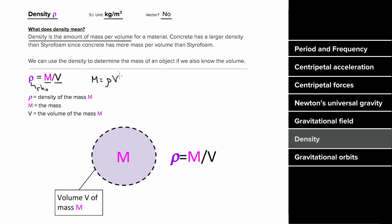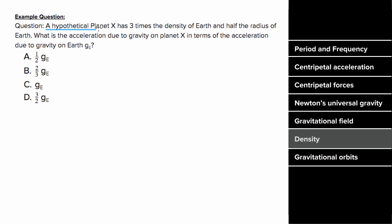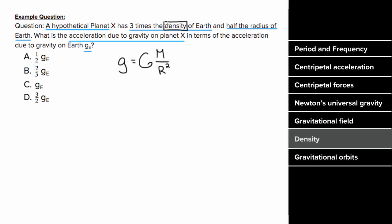So what's an example problem involving density look like? Let's try the hypothetical planet problem again, but this time planet X has three times the density of Earth and half the radius. We write the gravitational field as big G M over R squared, but we don't know the mass — we just know the density. So we rewrite M as rho times V, since mass equals density times volume. But we don't know the volume, just the radius, so we rewrite volume using the sphere formula: four-thirds pi r cubed.